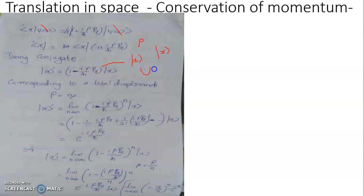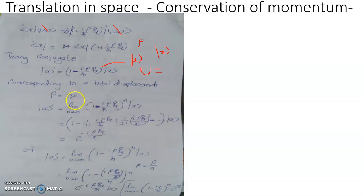This can be taken, as done in Shankar's textbook, as an infinitesimally small unitary operator U equal to e raised to minus iρp_x divided by ħ. Anyway, we will account for a finite displacement capital ρ as N number of infinitesimally small displacements small ρ, so evidently capital ρ equals N times small ρ.